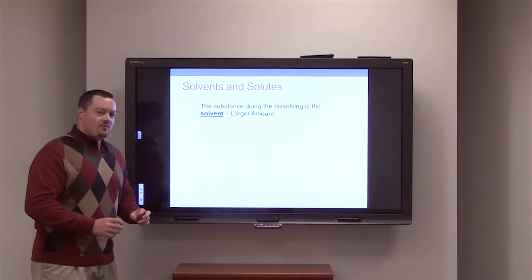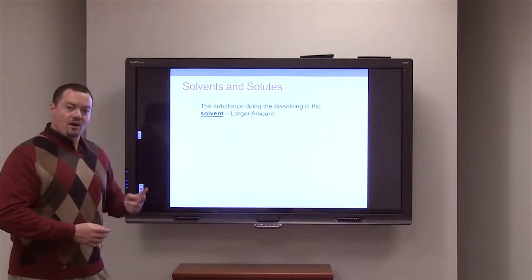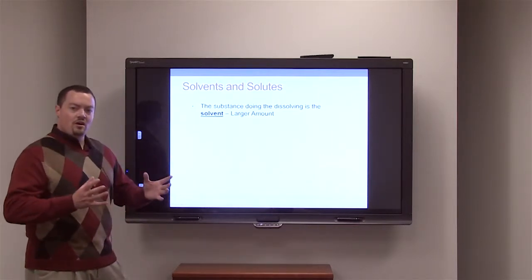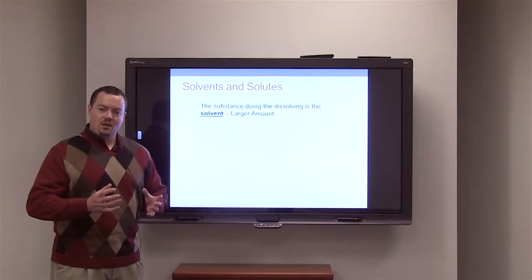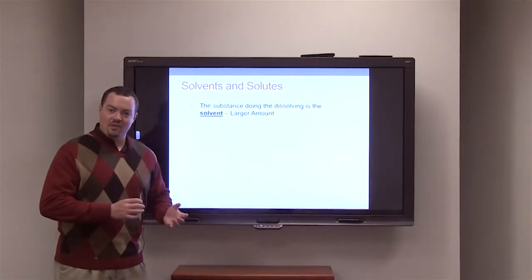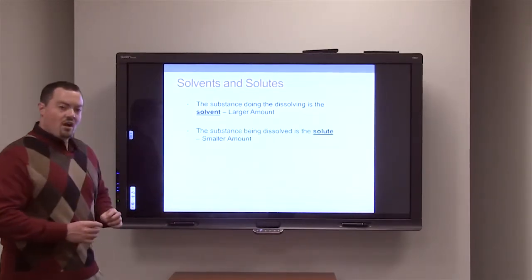Now, what are the different parts that make up a solution? There are two parts that make up all solutions. First of all, the solvent. The solvent is the larger of the two items. This is the part of the solution that does the dissolving or dissolves the smaller part. That's known as the solvent.